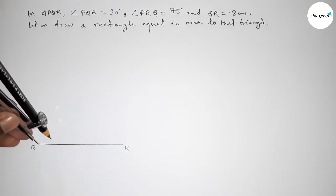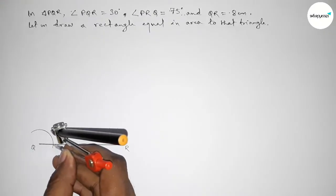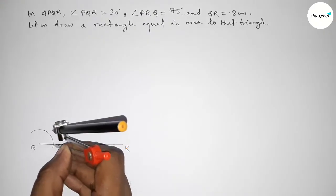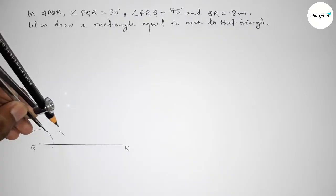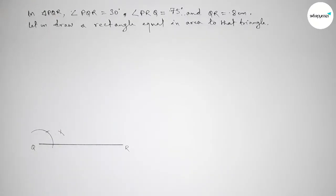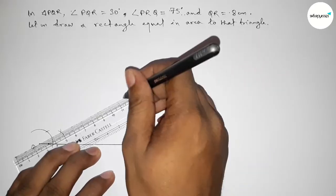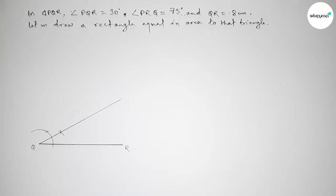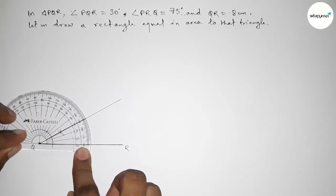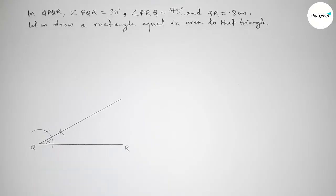Putting the compass on the point Q and taking any length, drawing an arc. With the same length, putting the compass here and cutting here, and drawing an arc again. With the same length, putting the compass here and cutting here so both curves intersect at a point. Joining this line to get a 30 degree angle. Checking this angle using a protractor — this is perfectly a 30 degree angle.